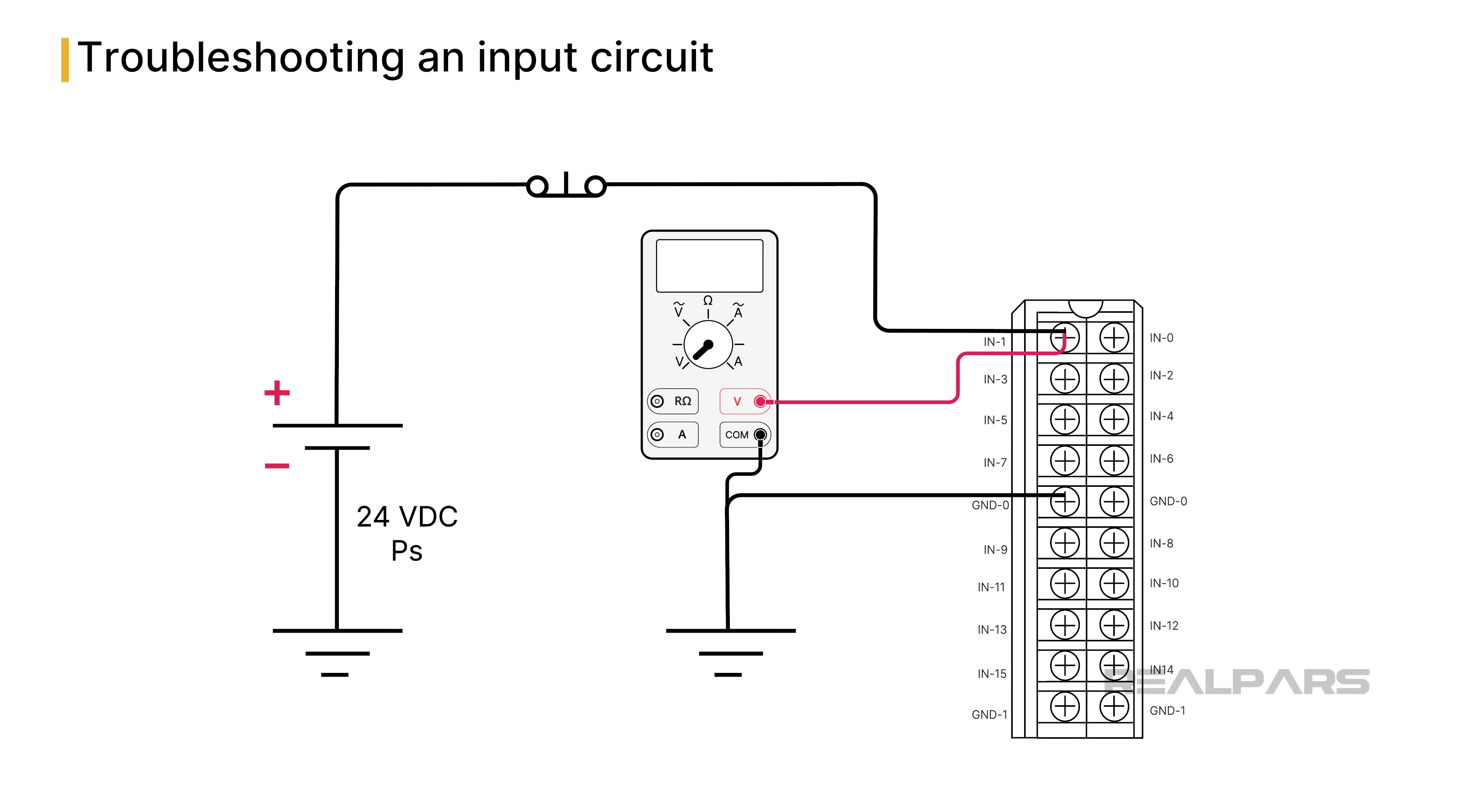The next step is to move the voltmeter's red lead to the switch's module side. If the voltmeter reads plus 24 volts DC, there is likely a broken wire between the switch and terminal 1 of the input module. If the voltmeter reads 0 volts DC, it could be a defective switch or power supply.